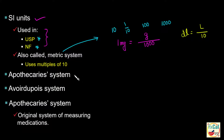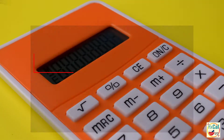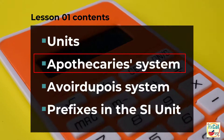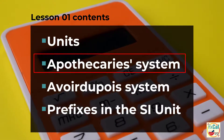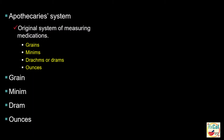Two other systems you should be familiar with are the apothecary system and the avoirdupois system. The apothecary system is the original system of measurement of medications. It uses units such as grains, minims, drams, and ounces.